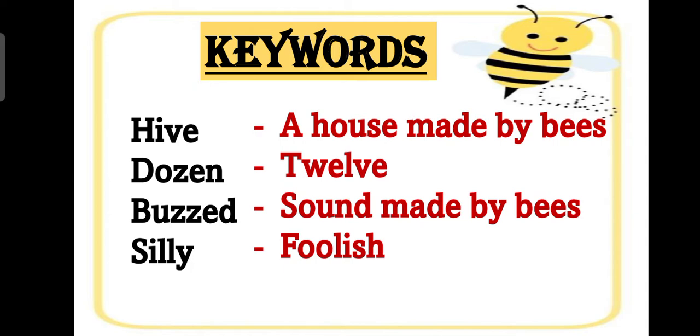Next is buzzed. Buzzed means sound made by bees. Jaise hem dogs jab aawaz nikalti tho usse hem kya bolte hain bark. Same with bees, hem bees ki aawaz ko kya bolte hain buzzed. Next is silly. It means foolish. Jab koi cheese hem bekar koi cheese karthi hain ya unuseful cheese karthi hain tho ham usse kya bol sakte hain silly bol sakte hain.